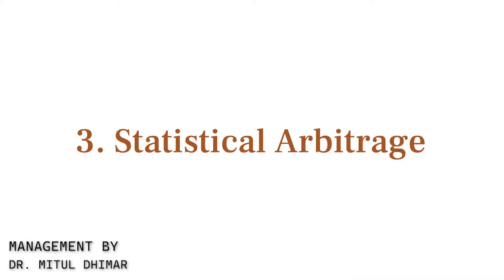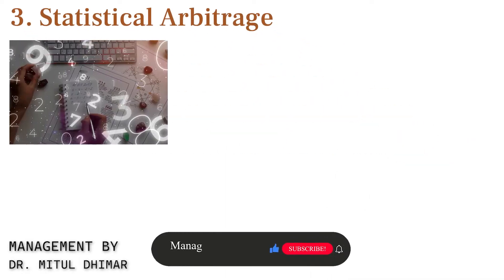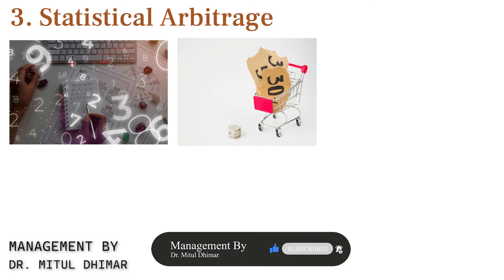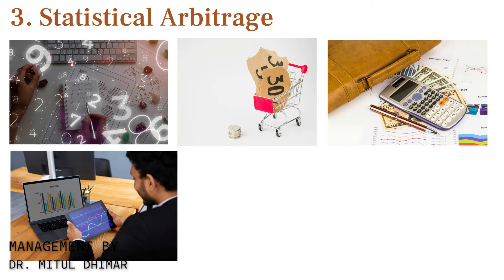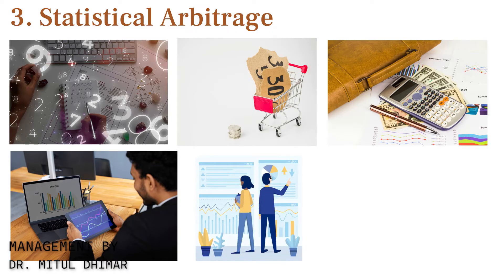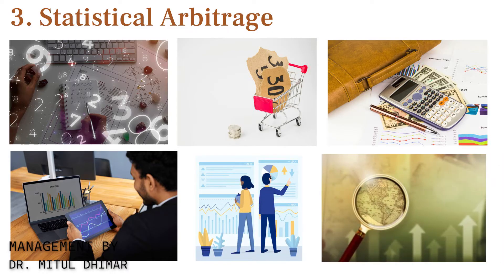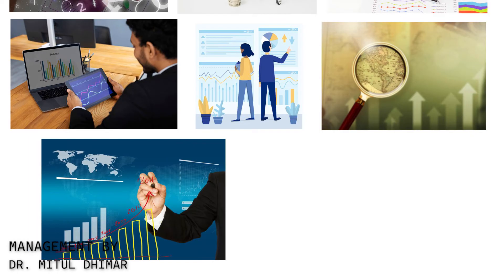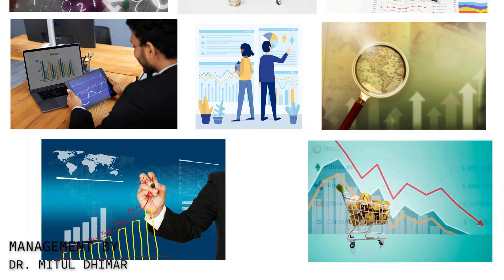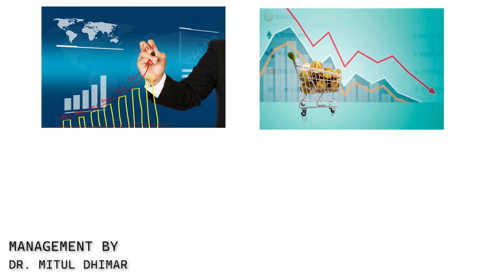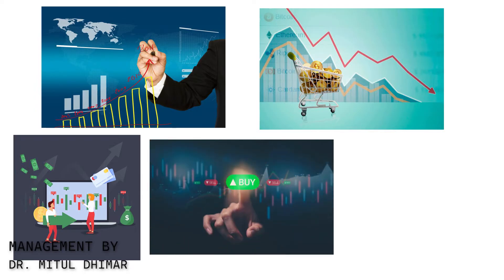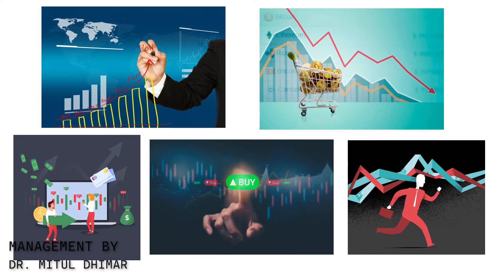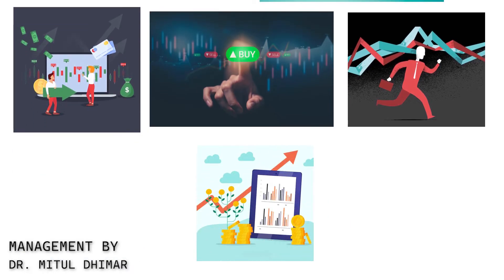Third, Statistical Arbitrage. Statistical arbitrage involves using mathematical models to identify and exploit pricing inefficiencies in financial instruments. Imagine you are analyzing two stocks in the same industry that historically move in tandem. However, due to market fluctuations, one stock's price drops more than the other. You could short sell the overpriced stock and buy the underpriced one, betting that the prices will eventually converge, allowing you to profit from this spread.